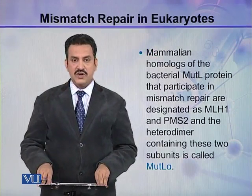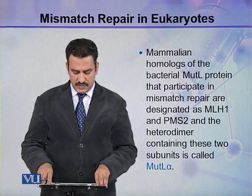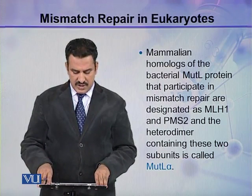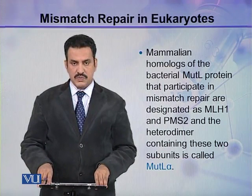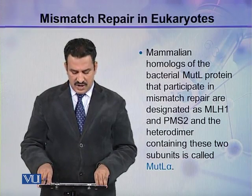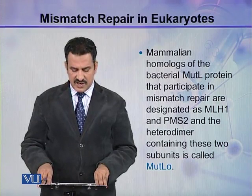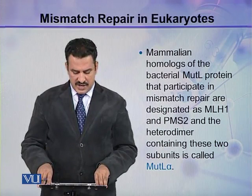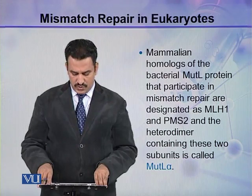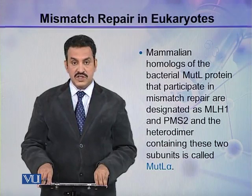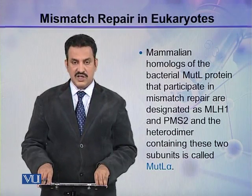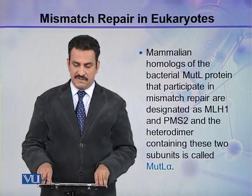Mammalian homologues of the bacterial MutL protein that participate in mismatch repair are designated as MLH1 and PMS2, and the heterodimer containing these two subunits is called MutL alpha.